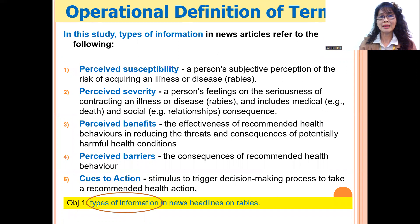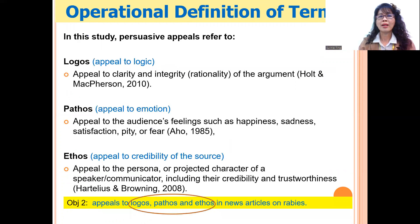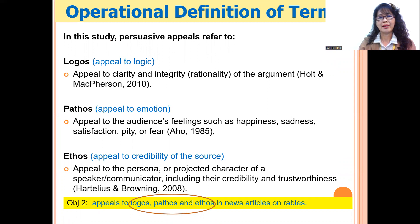Cues to action — what are the stimuli to trigger health protective actions — complete the operational definitions for types of information for objective one. As for persuasive appeals, there are three types: appeal to logic (logos), appeal to emotion (pathos), and appeal to the credibility of the source (ethos), and these definitions will be used later in the analysis.